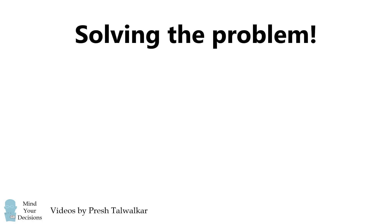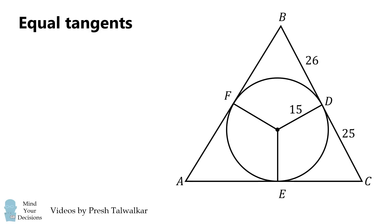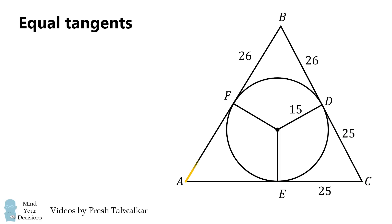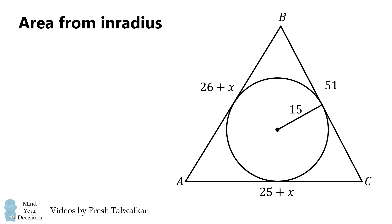Now let's apply these concepts to solve the problem. First, using equal tangents: BD equals BF, so BF equals 26. CD and CE are equal tangents, so CE equals 25. If AF equals X, then AE also equals X. Consequently, side AB is 26 plus X, AC is 25 plus X, and BC equals 26 plus 25, which equals 51.